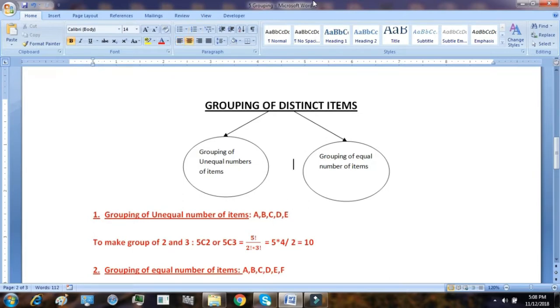Suppose I have 5 letters which are A, B, C, D and E. Now I want to make 2 groups. And these 2 groups will be: the first group will contain 2 letters and the second group will contain 3 letters. So it is very simple. Just make the combination formula. Which is 5C2 or 5C3.